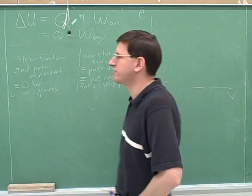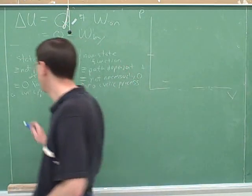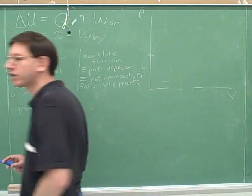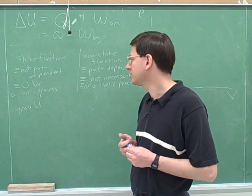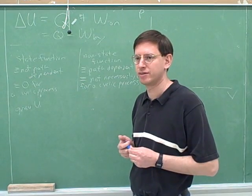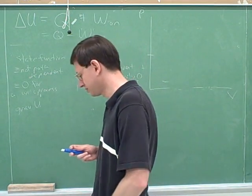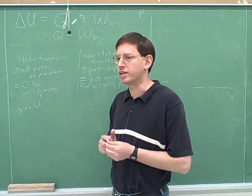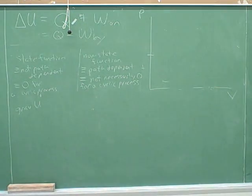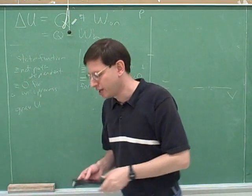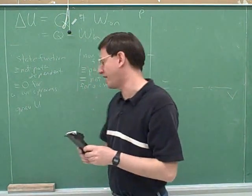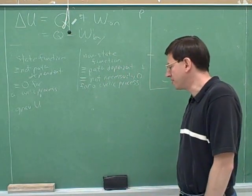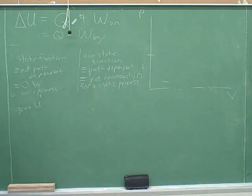To give an example, gravitational potential energy is a state function — it's not path dependent. We can see why: let's say I take my planner and it starts on the floor. I pick it up and put it over here. There's going to be some change in its gravitational potential energy.